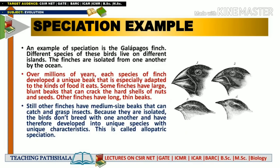One of the most famous examples of speciation is the formation of Galapagos finches. Different species of these birds live on different islands, and the finches are isolated from one another by the ocean. Over millions of years, each species of finch developed a unique beak specially adapted to the kind of food it eats. Some finches have large blunt beaks that can crack the hard shells of nuts and seeds, others have long thin beaks, and still others have medium-sized beaks that can catch and grasp insects.